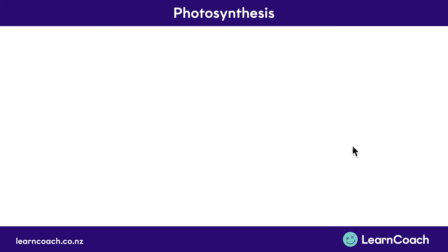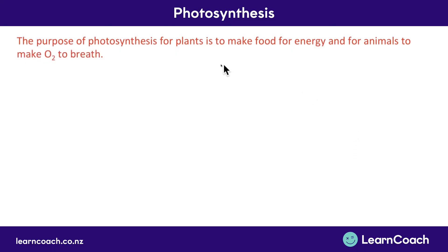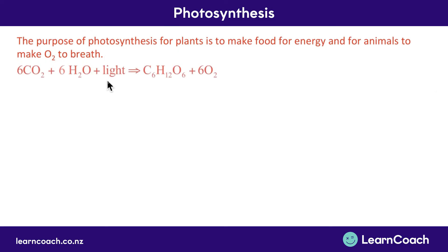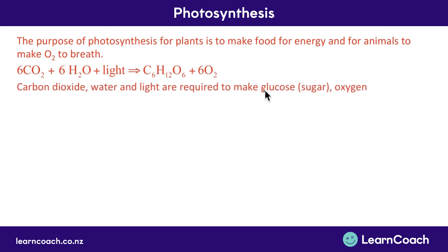First, the purpose. Photosynthesis allows plants to make food for energy, and for animals it makes oxygen to breathe. Now looking at what's needed — the reactants and products — the easiest way is to remember the equation: carbon dioxide plus water plus light goes to glucose (sugar) plus oxygen. Write both the chemical equation and the word equation down if you can.